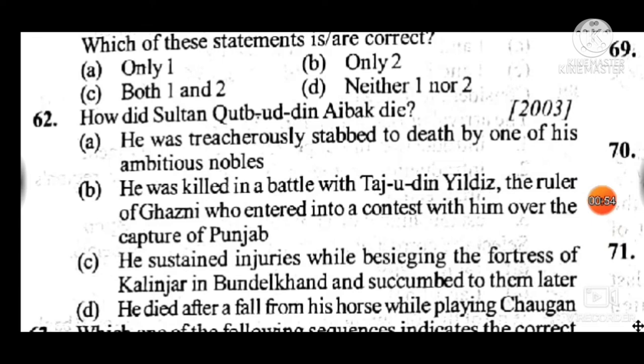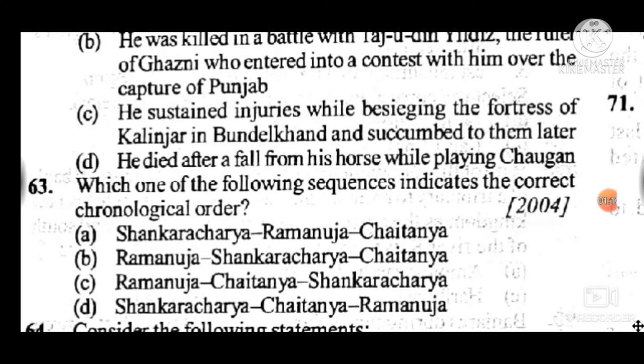Question 62: How did Sultan Qutbuddin Aibak die? Answer is D — he died after a fall from his horse while playing Chaugan (polo). Question 63: Which one of the following sequences indicates the correct chronological order? Answer is A — Shankaracharya, Ramanuja, Chaitanya.